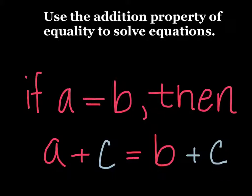this property states that if we have an equation where a equals b, then we can add a value c to both sides of the equation, and the statement continues to be true.